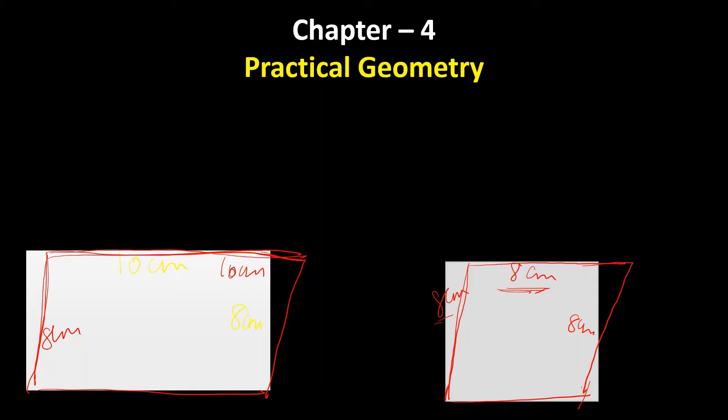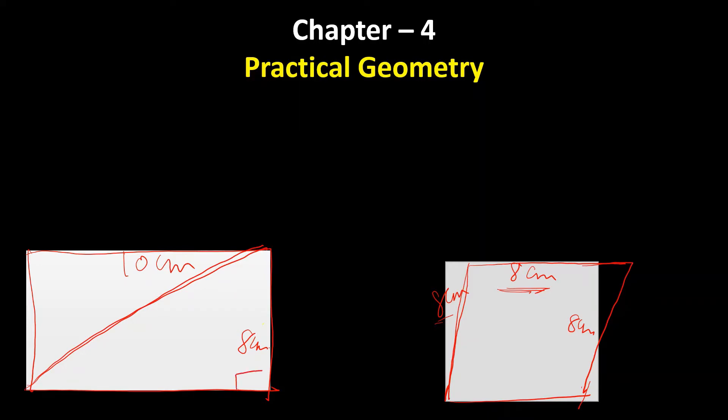If I just give you the 4 measurements, can you draw a unique quadrilateral? We cannot draw a unique quadrilateral using the given 4 measurements. At least we need 5 measurements to construct a unique quadrilateral. For example, if I give this diagonal or this angle is 90 degrees, then we cannot change this shape because if this diagonal is fixed, we cannot push this length and breadth.